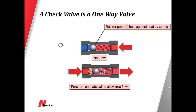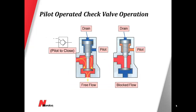Example of a simple check valve. This is an example of a pilot-to-close check valve. A pilot line is used to hold the poppet valve against the seat, preventing any flow.